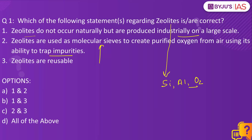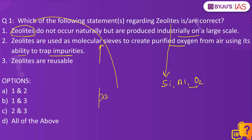These zeolites are used as molecular sieves — as strainers — to create purified oxygen from air using their ability to trap impurities. Because of their porous properties, they are able to trap the impurities. And these zeolites are reusable as well.